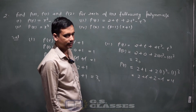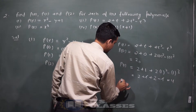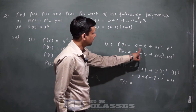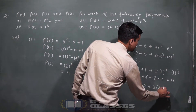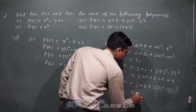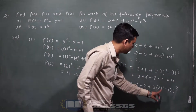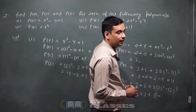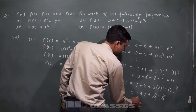Answer आ जाएगा 4। P(2) — t की value 2: 2 plus 2 plus 2(2)² minus (2)³। 2 plus 2 plus 4×2=8, minus 2³=8। 8 से 8 cancel — answer है 4।